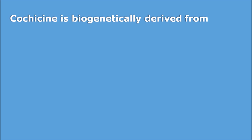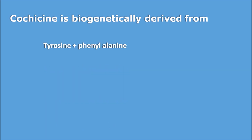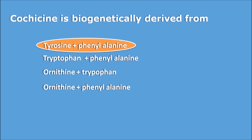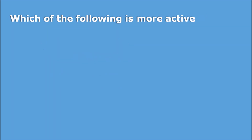A question from pharmacognosy: colchicine is biogenetically derived from? Options are tyrosine plus phenylalanine, tryptophan plus phenylalanine, ornithine plus tryptophan, and ornithine plus phenylalanine. Colchicine is an alkaloid belonging to the isoquinoline category, which is derived from tyrosine plus phenylalanine. So the first option is the right answer. This is a direct question and with practice anyone can get the right answer.